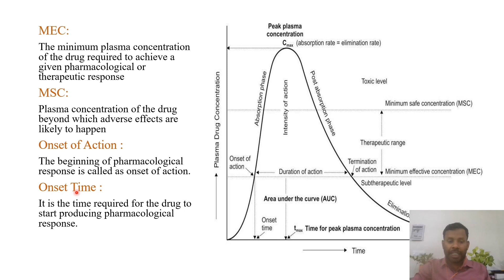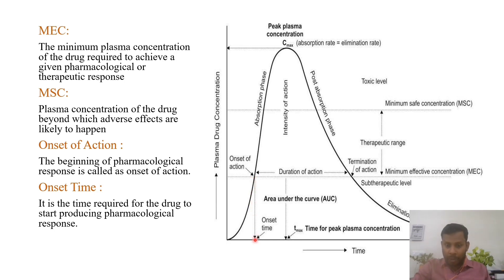Next, onset time: the time required for the drug to start pharmacological action is called onset time. How much time is required for the drug to start its action — that is onset time. From the onset of action point, if we draw a line to the y-axis, that point will be onset time, meaning this much time is required for the drug to start its action.